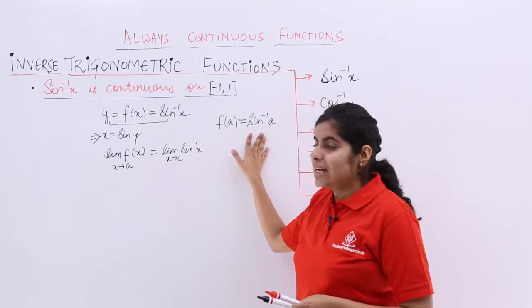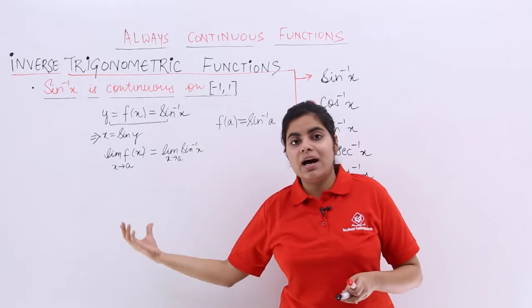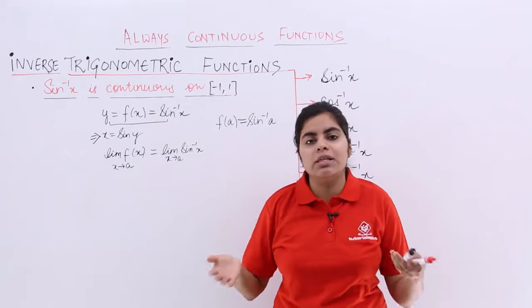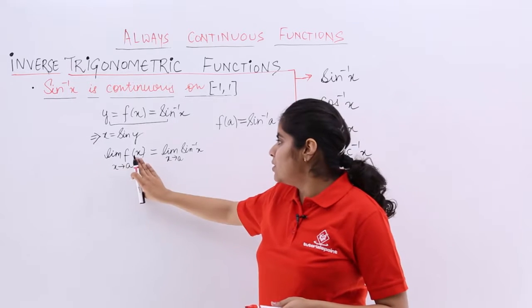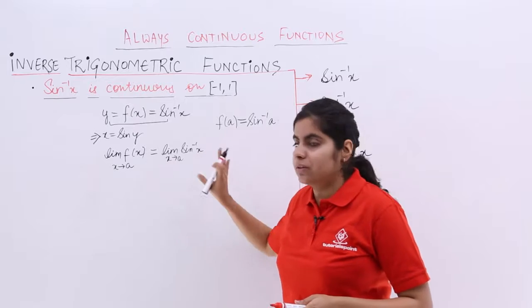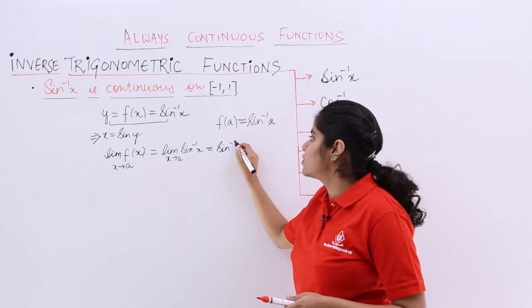Now, if it is sine inverse a, that means the value of the function is sine inverse a. If the answer to the limits is also sine inverse a, yes, we can prove it is continuous. So, that I say, limit f(x) x tends to a is here. Now, x tends to a means what? You can directly put sine inverse a.